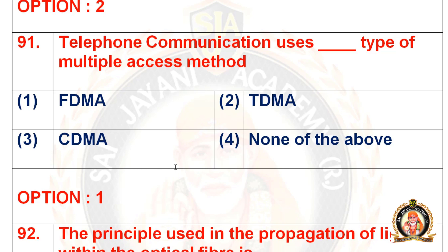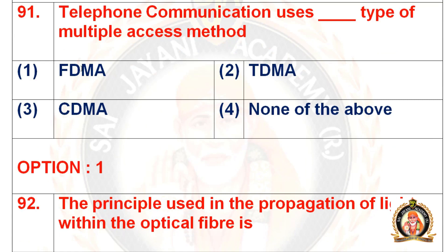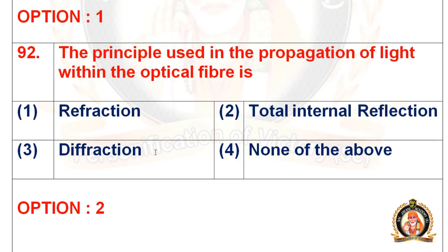Move on to the 91st question: telephone communication uses dash type of multiple access method. The first option is FDMA (frequency division multiple access), the second is TDMA (time division multiple access), the third is CDMA (code division multiple access), and the fourth is none of the above. The right option is FDMA. Telephone communication uses the FDMA type of multiple access method.